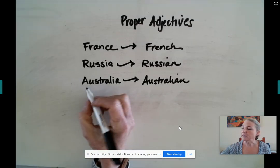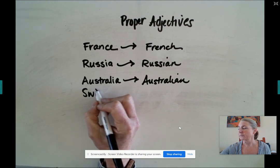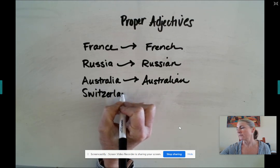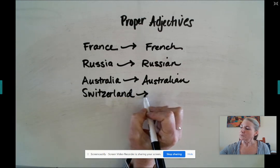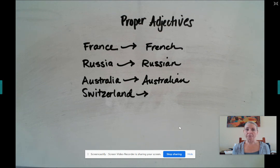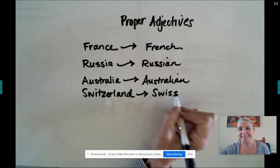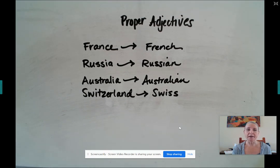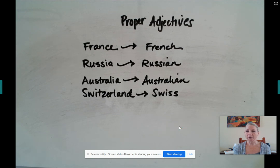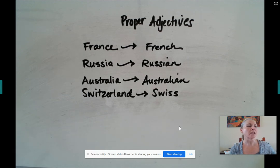There are other examples too. If we take a look at Switzerland, we would refer to people from Switzerland with the proper adjective Swiss — not Swissians. So there are some variations here. If you come across any that you're not familiar with and they're asking you to take that proper noun and change it to a proper adjective, you might want to just ask your parents. Most of them you should be in good shape on.